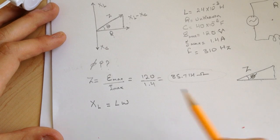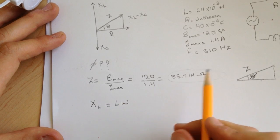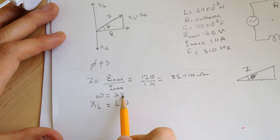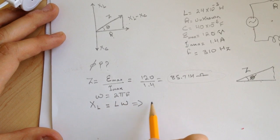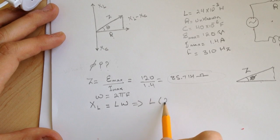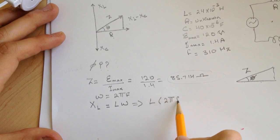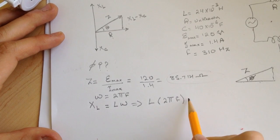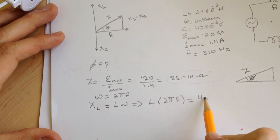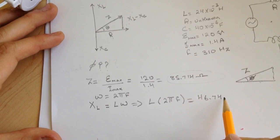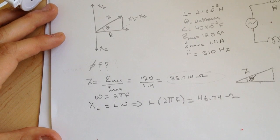And to change from omega to frequency, omega equals 2 pi f. So doing the same here, it's L 2 pi f. I got for this one 46.74 ohms.